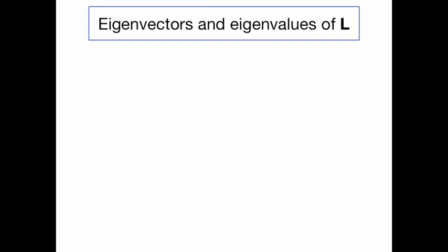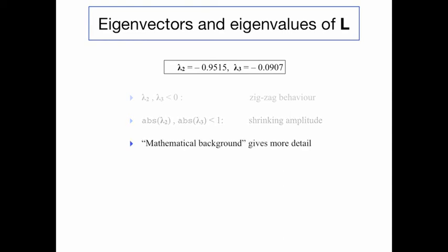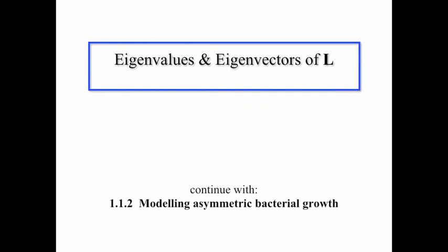Finally, as a side remark, the other two eigenvalues also have meaning, although not for the steady state calculation. The fact that they are both negative indicates that the temporal behavior will be zigzagging — so-called sub-harmonic behavior. The fact that both absolute values are less than 1 tells us that the amplitude must be shrinking as time goes by. Read the mathematical background for further information. We conclude this tutorial, and I would like to recommend that you continue with section 1.1.2, which relates to a literature-published model on bacterial aging.